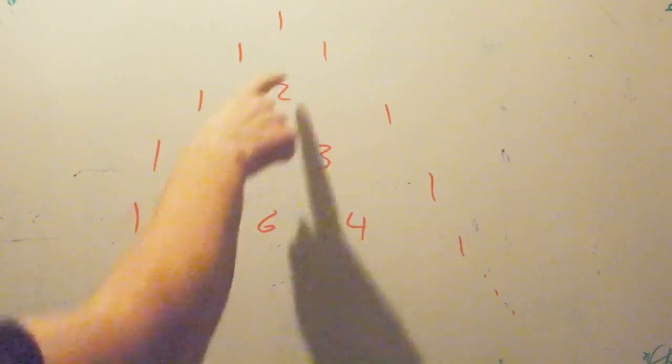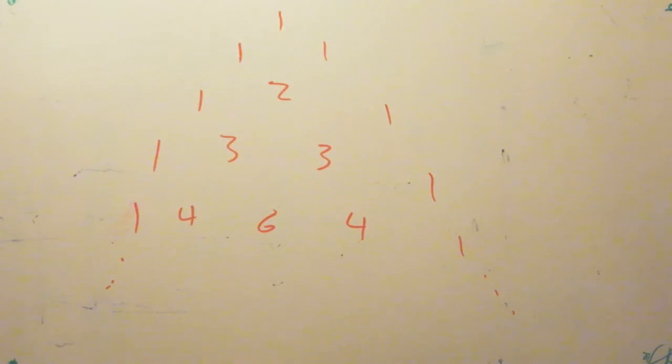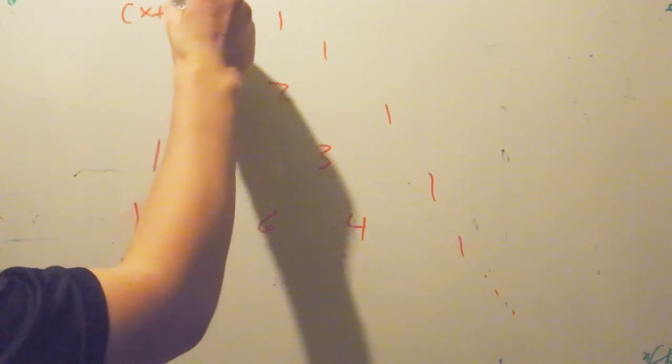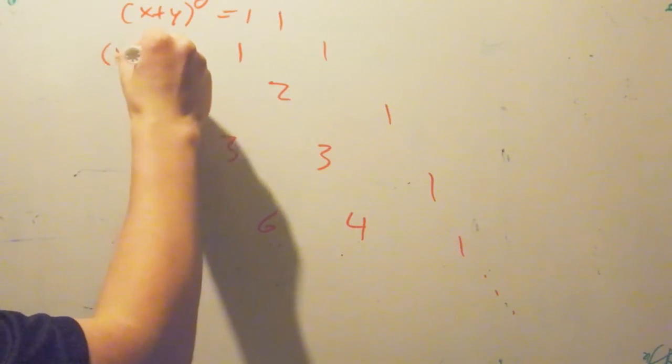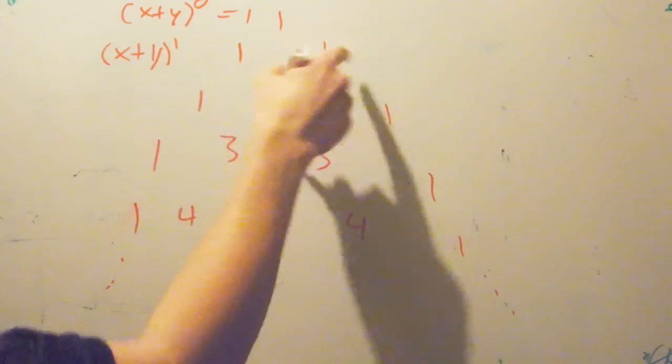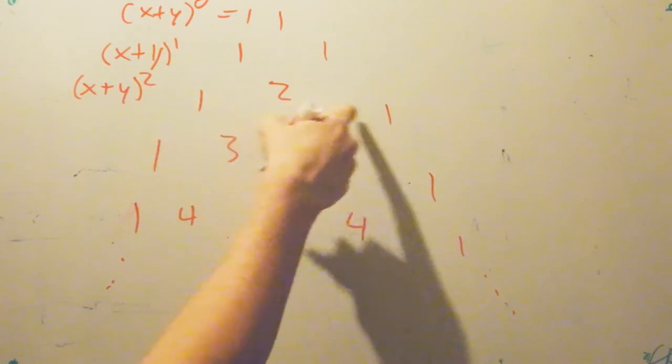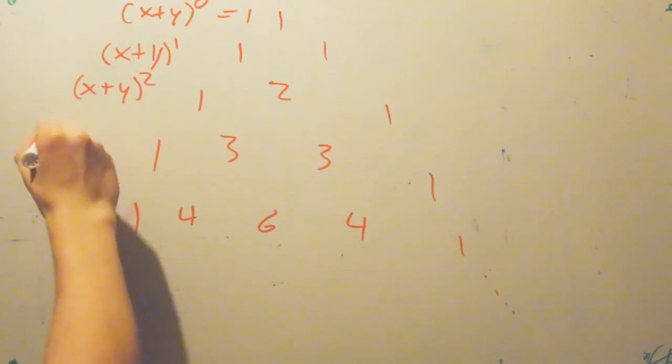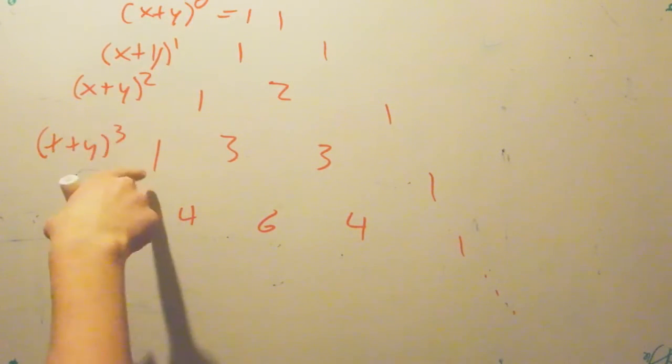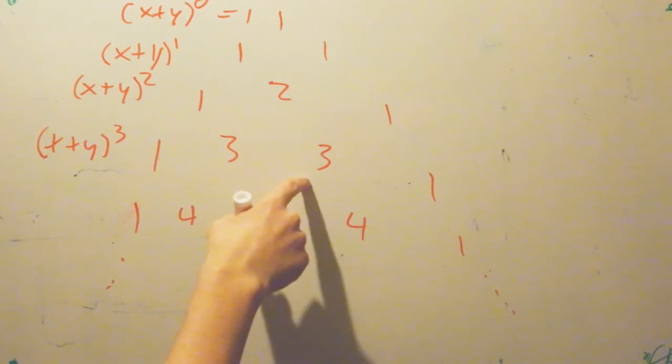Next, we want to go over what a Pascal's triangle is. Pascal's triangle is where you have sets of 1's going across. The rest of the numbers are found by adding the diagonals on top together. So 1 plus 1 is 2, 1 plus 2 is 3, 3 plus 3 is 6, for instance. x plus y to the 0 equals 1. x plus y to the first gives you 1x plus 1y. x plus y squared gives you 1x squared plus 2xy plus 1y squared, and x plus y cubed gives you 1x cubed plus 3x squared y plus 3y squared x plus 1y cubed, and so forth.